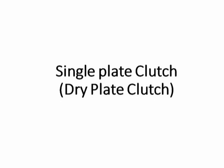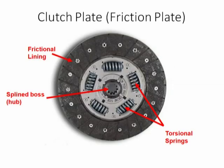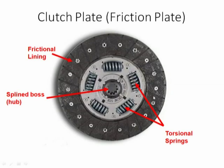Now we are going to see different types of friction clutches. First, we will start with the single plate clutch, also known as the dry plate clutch, operated in a dry condition — no oil is used between the contacting surfaces. This figure shows the clutch plate, also known as the friction plate, which has a friction lining. At the center, there is a spline boss or hub. At some PCD, torsional springs are mounted. These torsional springs absorb shock loads — if sudden loads are applied and the friction linings are in contact, the load can be taken up in the radial direction by these torsional springs.